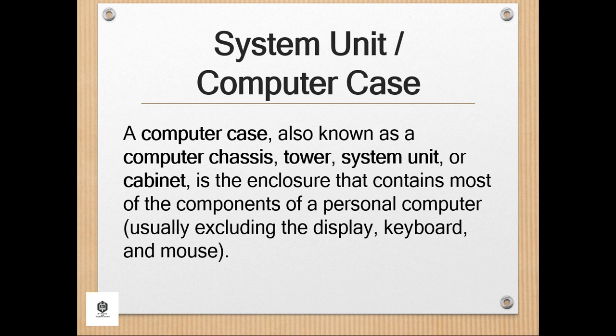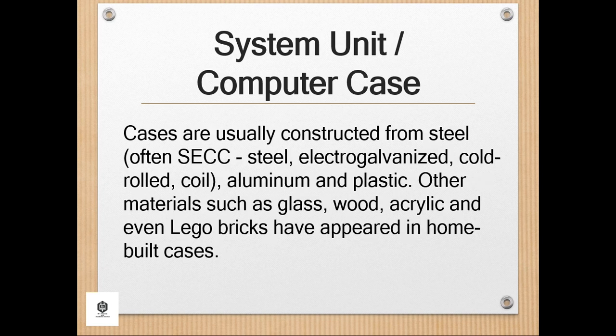The system unit also includes the case that houses the internal components of the computer. Cases are usually constructed from steel — often SECC (steel electro-galvanized cold-rolled coil) — aluminum, and plastic. Other materials such as glass, wood, acrylic, and even Lego bricks have appeared in home-built cases. The computer case is the metal and plastic box that contains the main components of the computer, including the motherboard, central processing unit (CPU), and power supply.